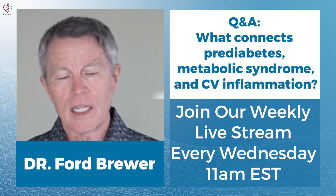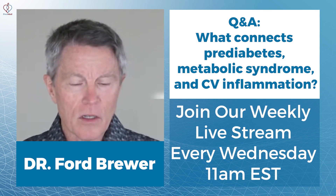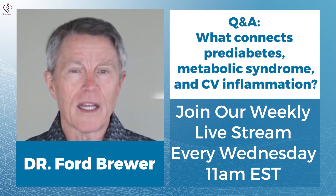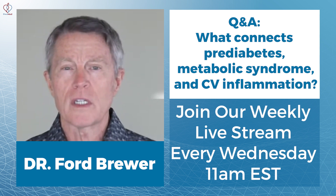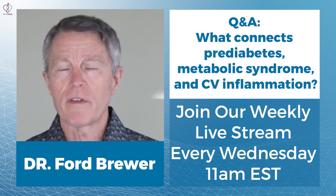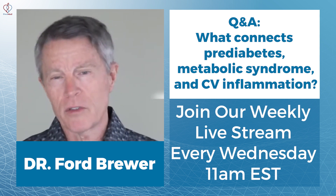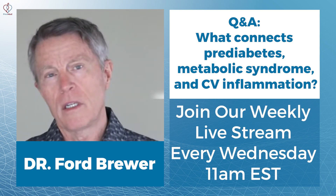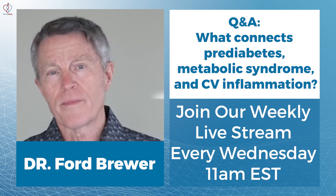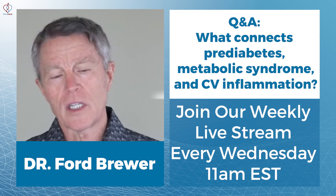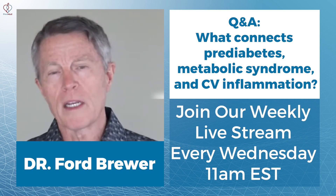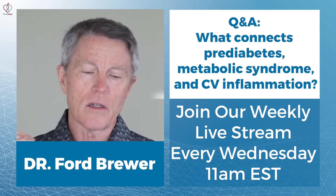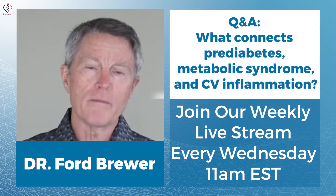You'll hear me use the term insulin resistance. At the end of the day, this all goes back to that one item — the root cause. Our receptors for insulin in our liver and our muscle cells become resistant to insulin. So instead of the blood sugar dropping and remaining where it needs to be, it slowly begins to creep up.